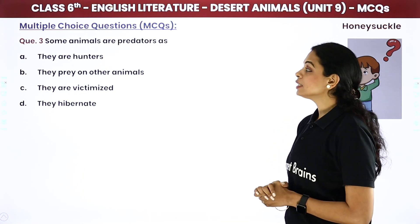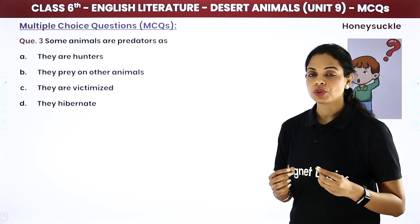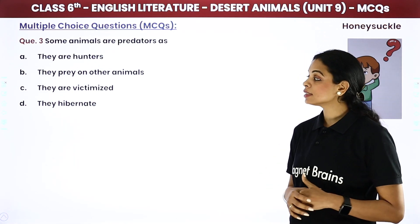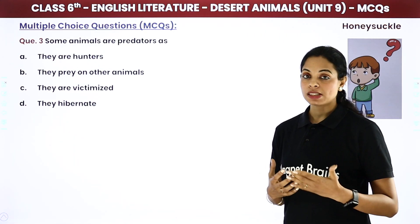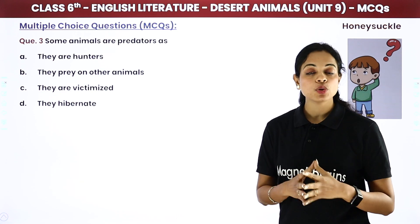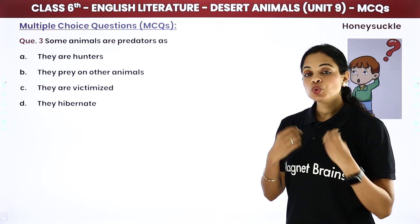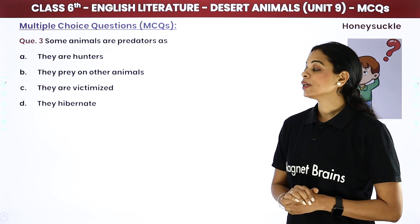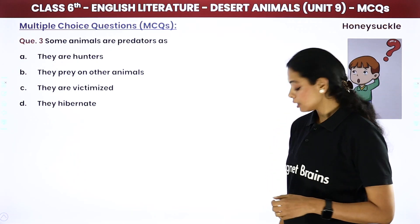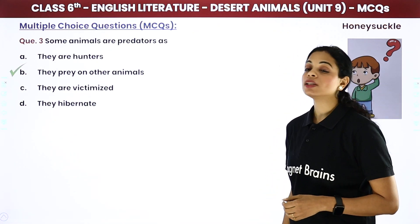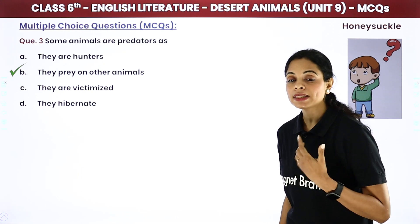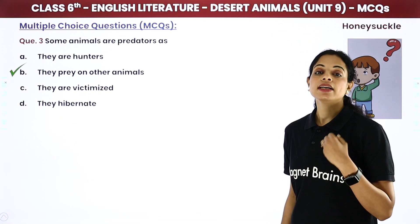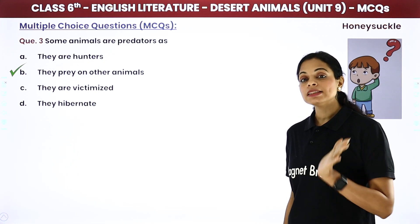Some animals are predators. Predators का मतलब क्या होता है? They prey on other animals — वो जो दूसरों पर dependent होते हैं अपने खाने के लिए, वो दूसरों को मार देते हैं। Options: they are victimized or they hibernate. The answer is: they prey on other animals. For example, a lion attacks a cow or deer — so lion is a predator.